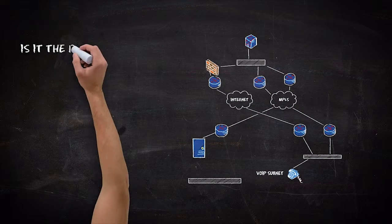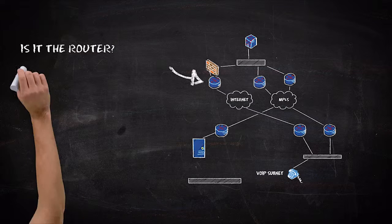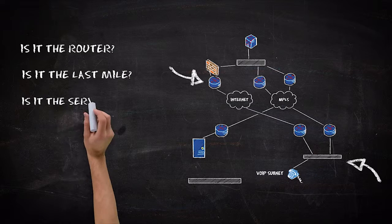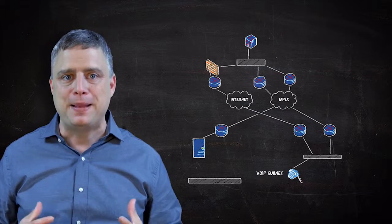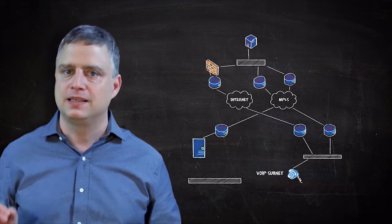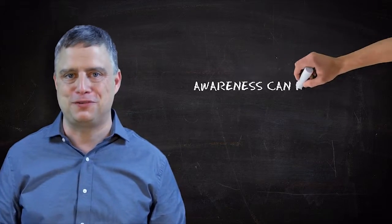Is the router at that location the problem? Is it the last mile link? Is it deep in the service provider's network? Maybe it has nothing to do with the WAN. Maybe the WAN is entirely innocent, but can the WAN's awareness help you solve problems faster?